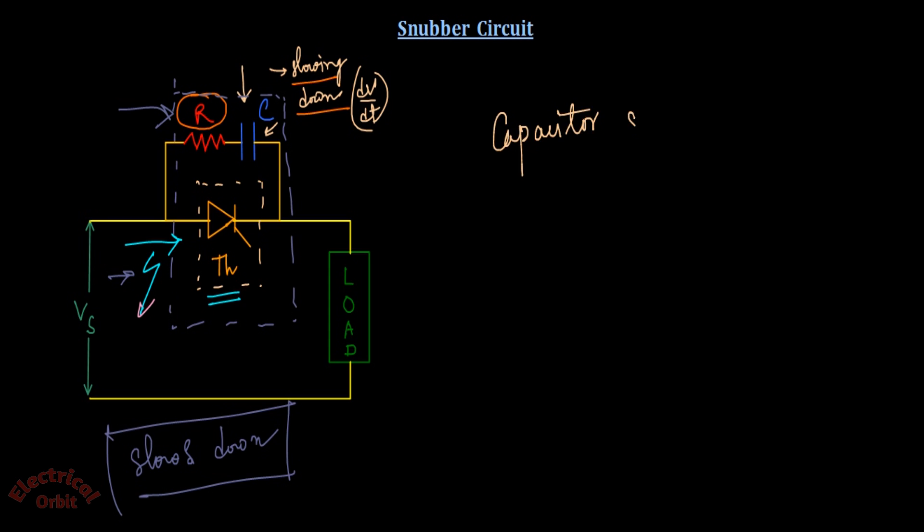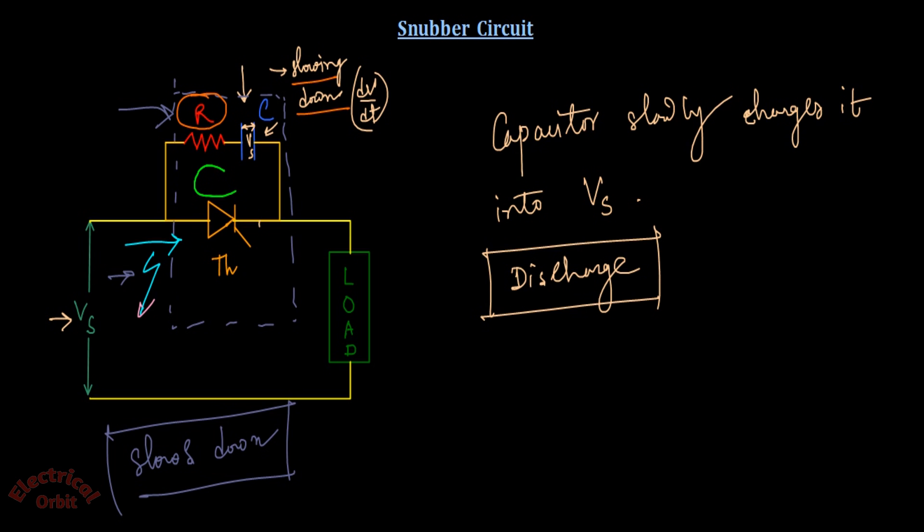See, whenever the overvoltage appears or voltage surge appears, then the capacitor slowly charges to the voltage vs. This is vs. When the capacitor is fully charged to the value of vs, then after charging it will start to discharge. Now what is the path of this discharging? It will be through this path because this is positive terminal and this is negative.